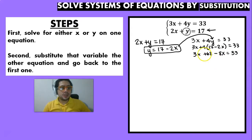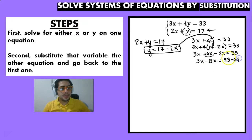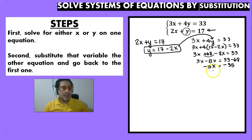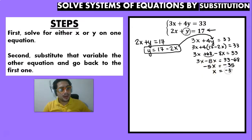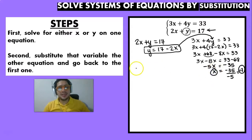Now we solve: I move the 68 to the right, so 3x minus 8x equals 33 minus 68, which gives us minus 5x equals minus 35. Since minus 5 is multiplying, it divides: minus 35 divided by minus 5 is positive 7. So x is equal to 7.